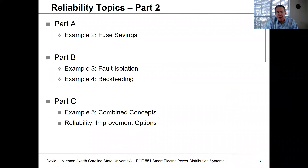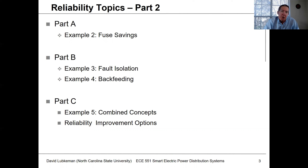I'm going to go through four different examples. I'll start with a fuse savings case, then switch to another video segment and continue on with fault isolation backfeeding, which will make use of some type of switching. In the last part, I'll combine some of the concepts together, showing the value of switches in general, and then get into these improvement options.